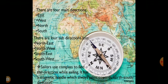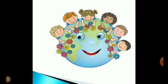What is a compass? A compass is an instrument that helps to find directions. You can see the dial of the compass marked with the four main directions and the four sub-directions. It has a magnetic needle which always points towards the North-South direction.